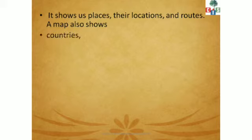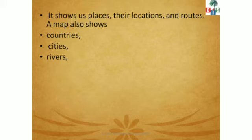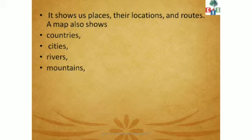A map also shows countries — for example, India has a map, America has a map. Every country has their own map. It also shows cities. So we have maps of countries, states, and cities. Rivers also have their own different maps. If you search on Google for river maps of India, you will find maps of all the rivers in India. That is also very interesting to see.